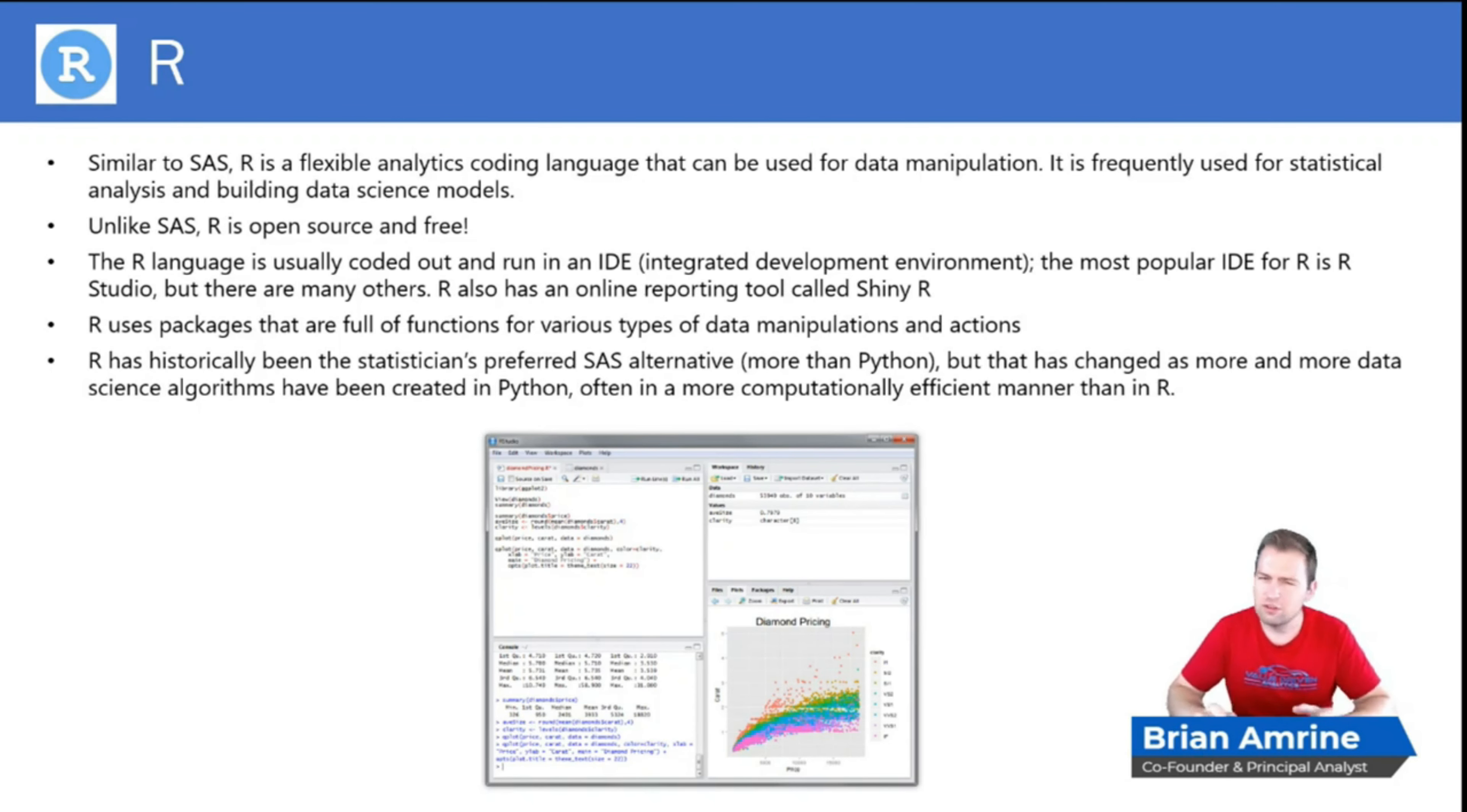Now, R has historically been the statistician's preferred SAS alternative, more so than Python. But that seems to be changing as more and more data science algorithms have been created in Python, often in a more computationally efficient manner than in R. That's a generalization.